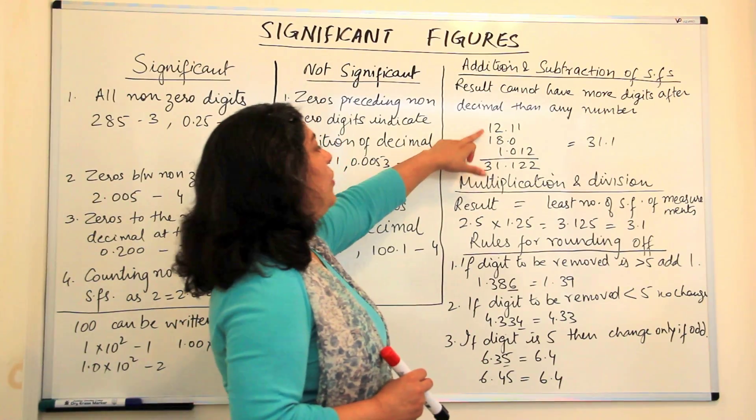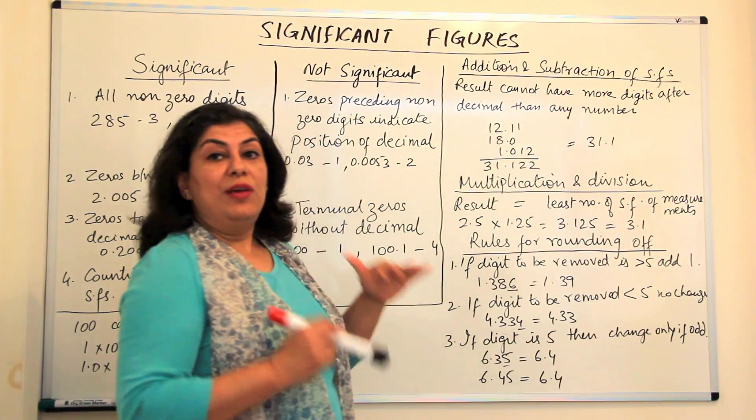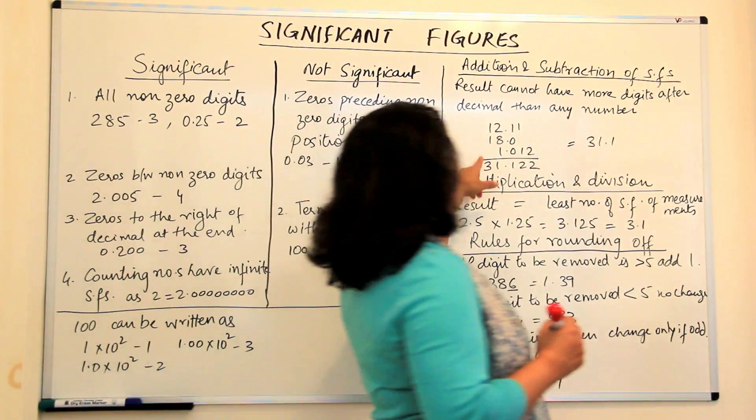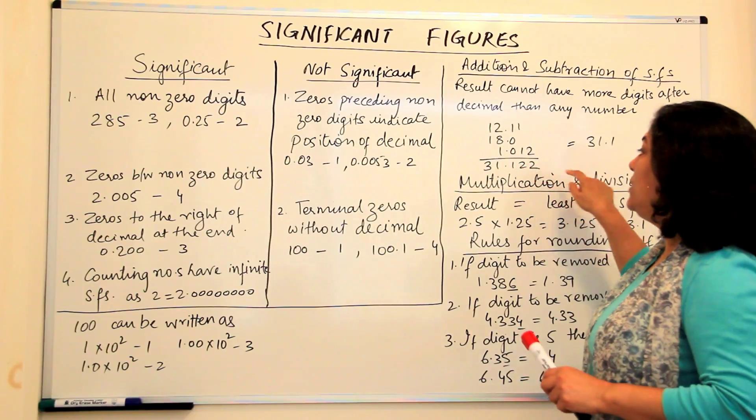One is 12.11, 18.0 and 1.012. When we find out the sum of these three, the numerical sum comes out to be 31.122, which is equal to,